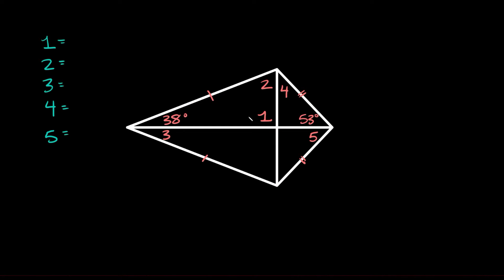Here's the next example. We're going to try and solve for angles one through five. Starting with angle one, you can see it's right where the two diagonals intersect, so that means it's a 90 degree right angle. For angle two, we again have a triangle — this angle is 38, this angle is 90, and all three angles must add up to 180. So angle two must be 52 degrees, because 52 plus 38 plus 90 is 180.